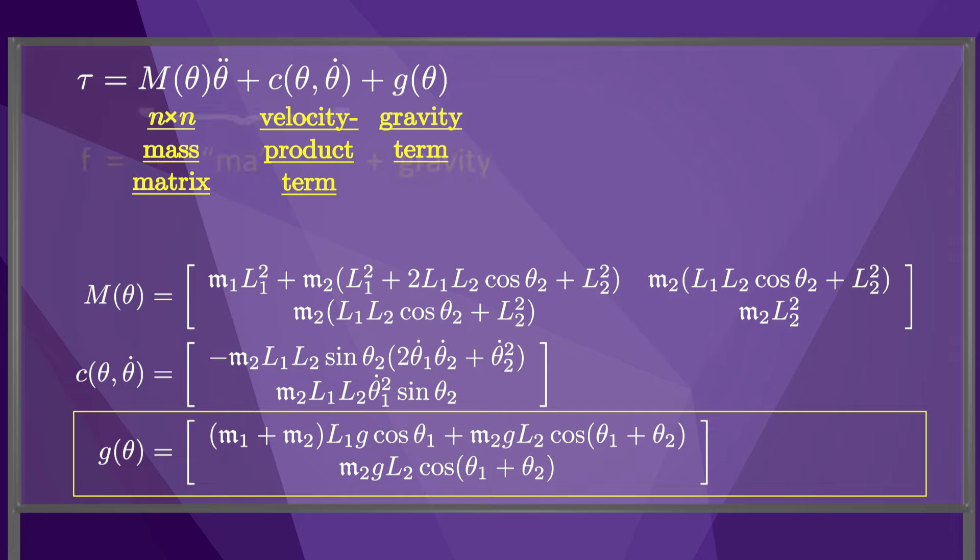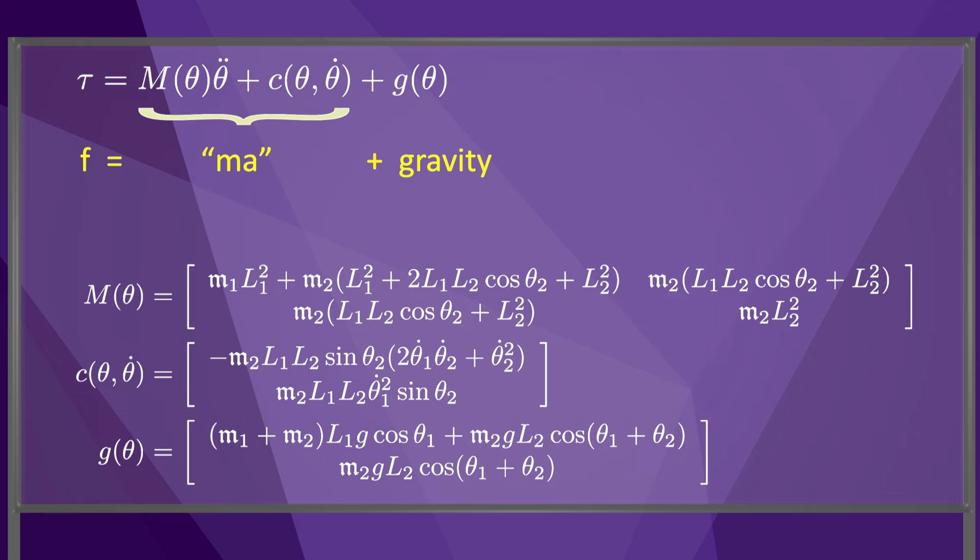Overall, this equation looks like F equals MA plus a gravity force, except that the accelerations of the masses depend not only on the joint accelerations, but also the products of the joint velocities. These velocity product terms appear because the joint coordinates are not inertial coordinates. We will explore velocity product terms in more detail in the next video.